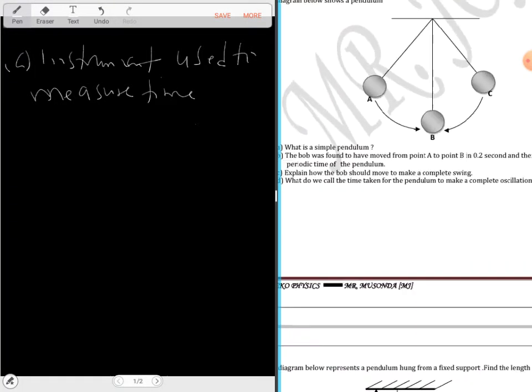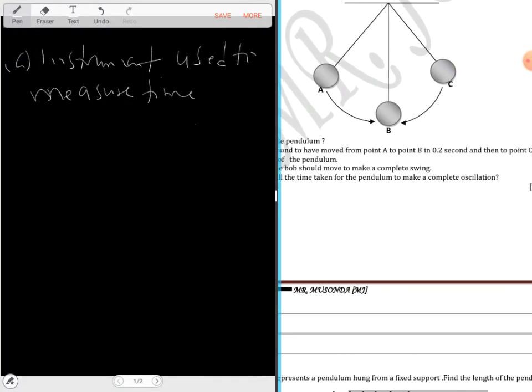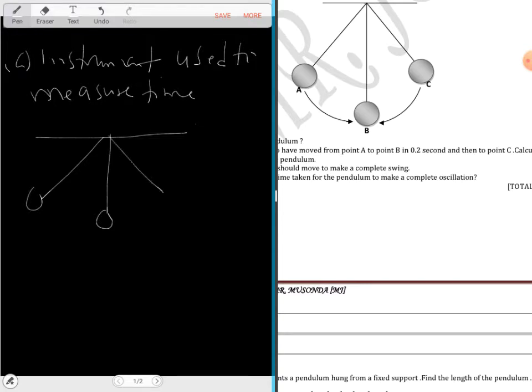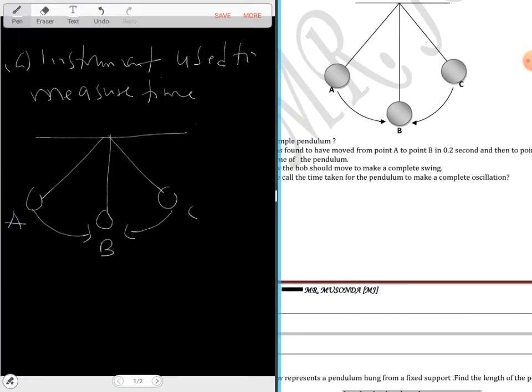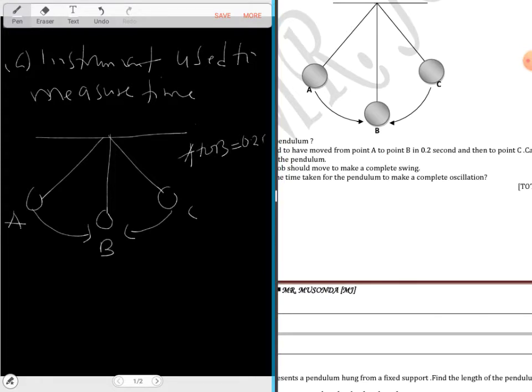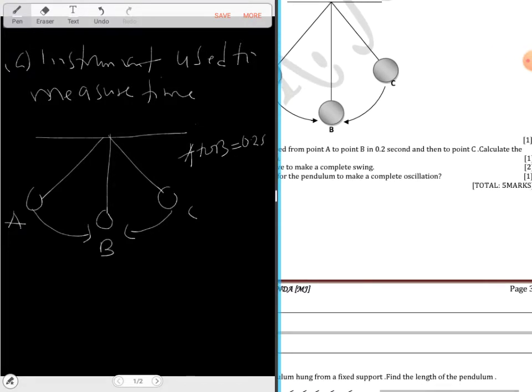The bulb was found to have moved from A to B. Let me just do a simple sketch here. So this is A, this is B. It has moved from A to B in 0.2 seconds, and then to point C.